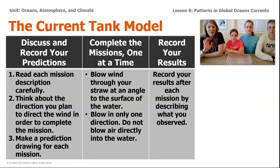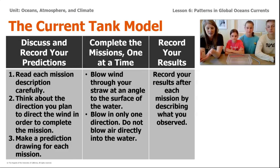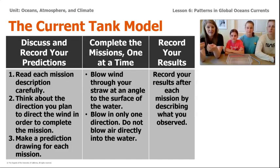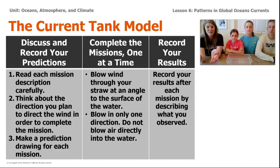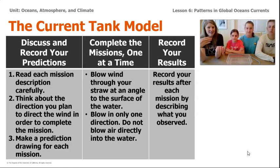Here are the three steps to doing this activity. First, we're going to discuss and record our predictions. You can either draw your predictions on a piece of paper or talk with each other. Think about how you could complete the mission and make a prediction with a drawing about how you think each mission will work. Once you discuss your predictions, move on to the mission. There are three missions altogether, and you'll do one at a time. After you're done with each mission, discuss or jot down your ideas.